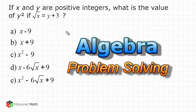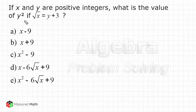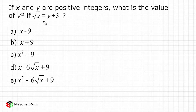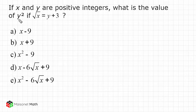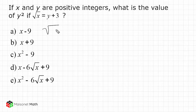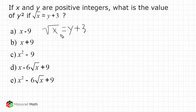What we are tasked to do is figure out the value of y to the second power if the square root of x is equal to y plus 3. Now, if we know what y is equal to, we would just take that and square it, because we have to figure out what y to the second power is. So we're going to take this expression — the square root of x equals y plus 3 — and solve for y.